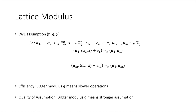For most applications relying on the LWE assumption, including PRFs, it is always better to set the modulus q as small as possible. The first reason is efficiency: applications that rely on LWE operate under the ring Z_q. As q gets bigger, the keys become bigger, and the operations also become slower.